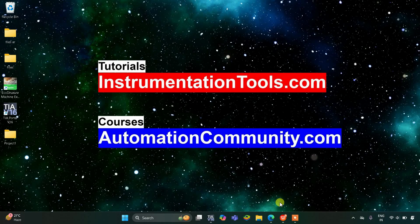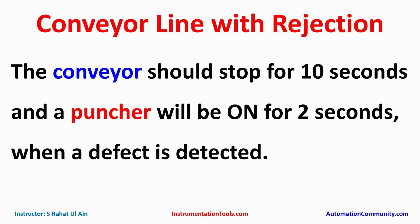Hello everyone, welcome to Automation Community. Today in this video we are going to discuss another example about a conveyor line with rejection. The conveyor should stop for 10 seconds and a puncher will be on for two seconds when a defect is detected. There is a sensor that detects the defect in a product or object, then the conveyor will stop for 10 seconds.